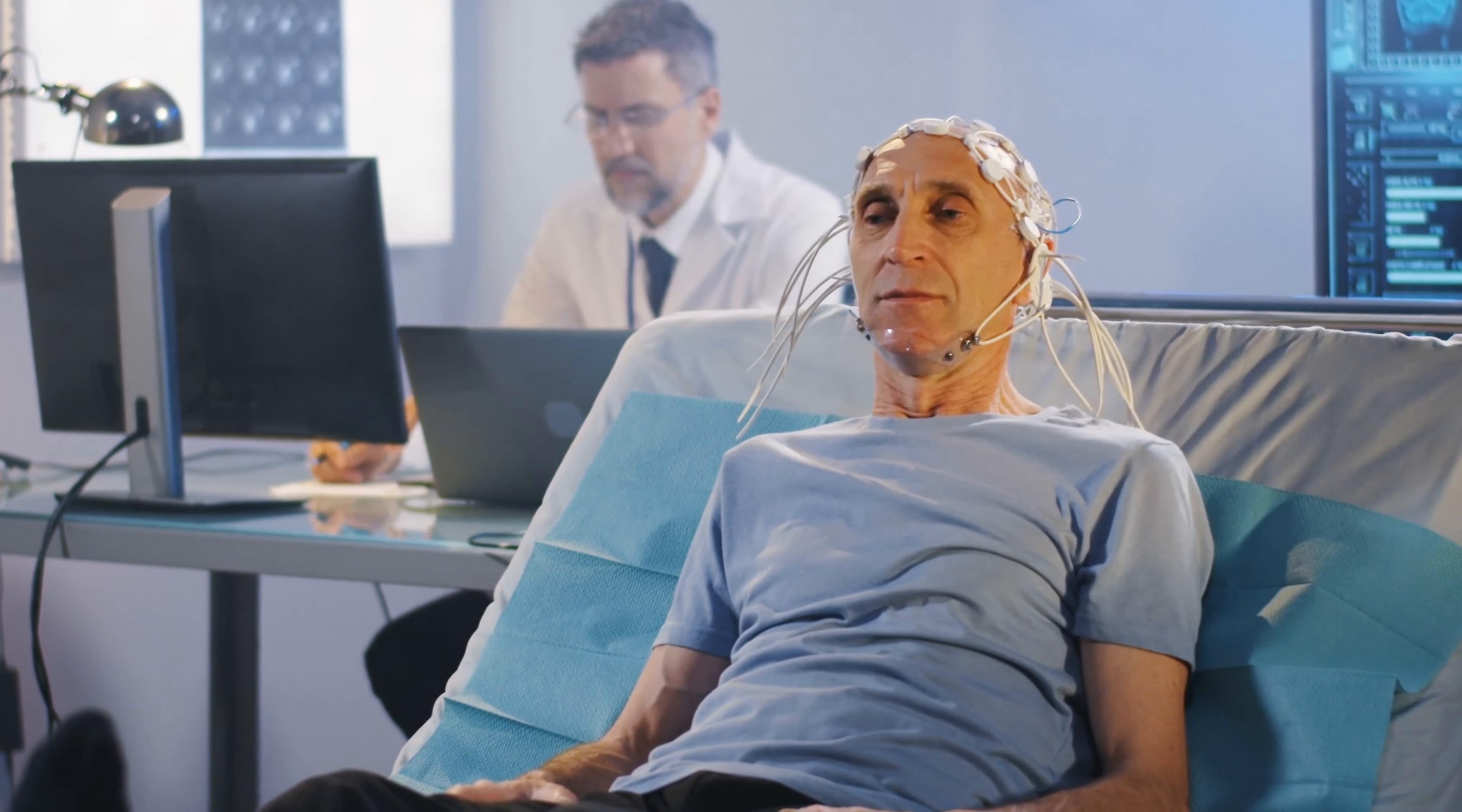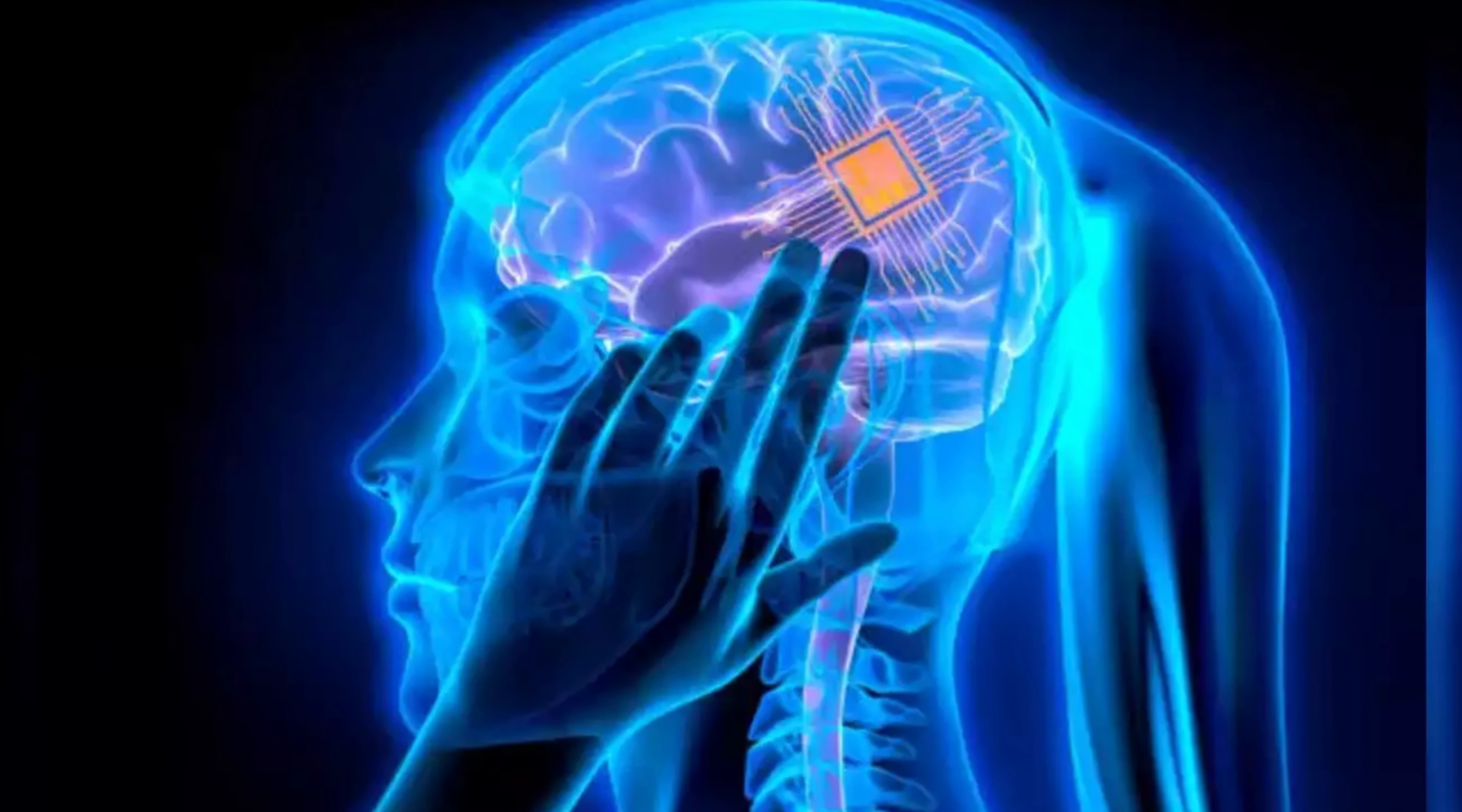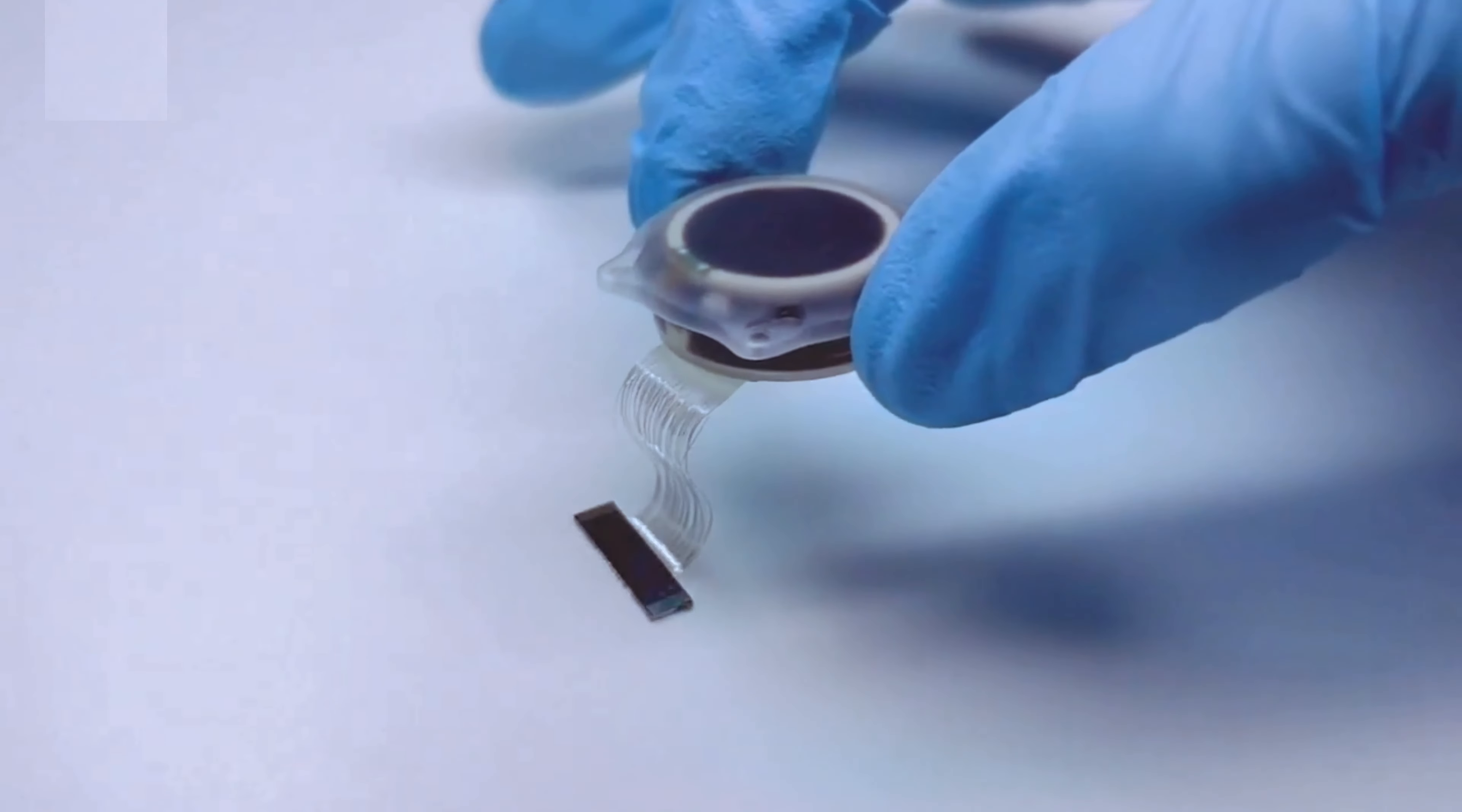This system works by capturing video footage from a digital camera, which is then wirelessly streamed to a smartphone. With advancements like Meta or Facebook smart glasses, it's possible to integrate digital cameras into stylish, regular-looking glasses. The video feed from these cameras is sent to your smartphone, which processes the information into a neural signal. This signal is then wirelessly transmitted to the N1 implant in your brain.